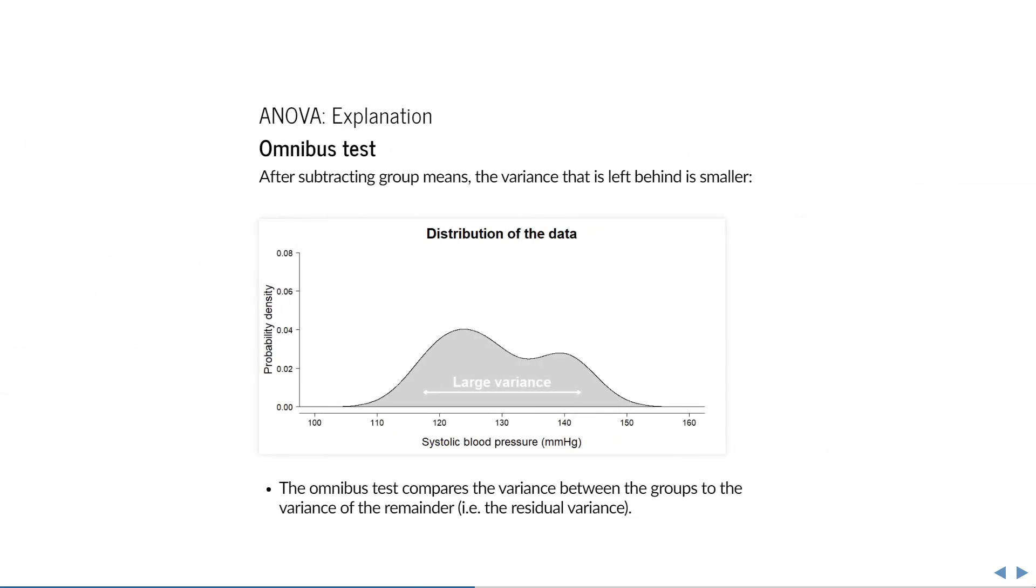So what is then the residual variance? Here is a simple visualization. Your data has some distribution, but this distribution is actually a mixture of the underlying distributions of the groups. When we subtract the means of those groups, then the observations are pulled together, and all that remains are individual differences from the group means.